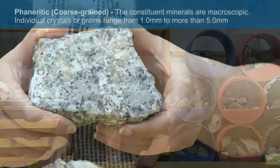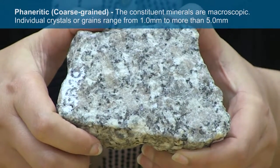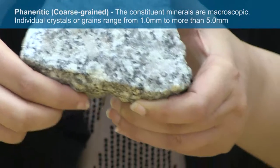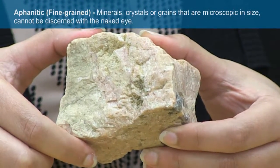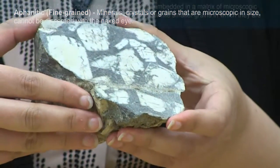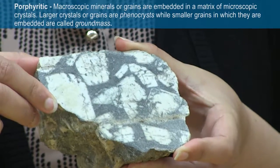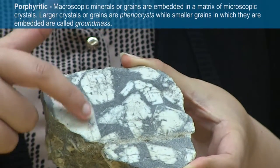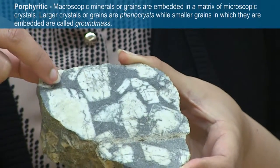Rock texture plays a vital role in the identification of rocks. For igneous rocks, major textures include: phaneritic or coarse-grained, where constituent minerals are macroscopic and individual crystals or grains range from 1 to more than 5 mm; aphanitic or fine-grained, where mineral crystals cannot be discerned with the naked eye; and porphyritic, where macroscopic minerals or grains are embedded in a matrix of microscopic crystals — the larger crystals are called phenocrysts, while the smaller surrounding grains are called groundmass.